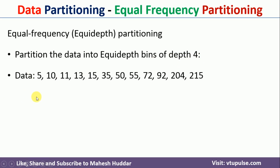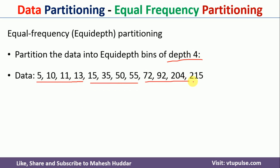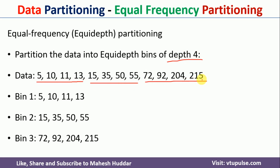Let us assume that we have been given some data. The very first thing we need to do is check whether the data is in ascending order or not. If it is in ascending order there is no problem; otherwise we need to sort the data into ascending order. Once we do that, based on the depth of 4, we put the first four data points into one group, the next four into the second group, and the following four into the third group, giving us three different partitions.